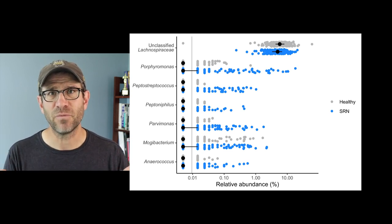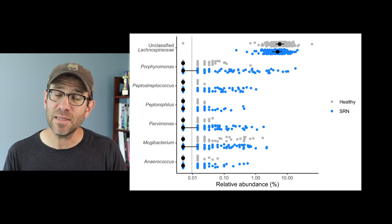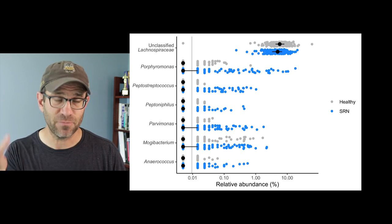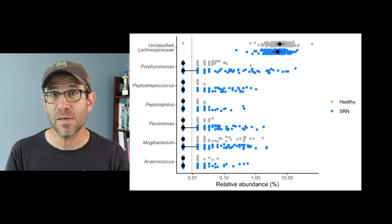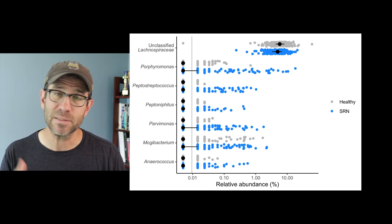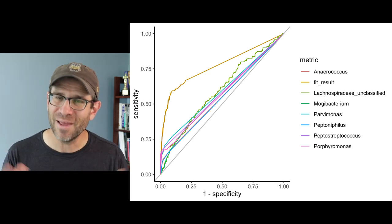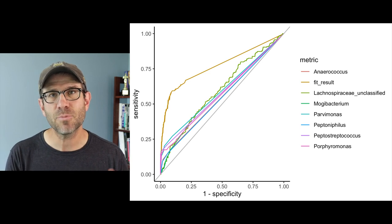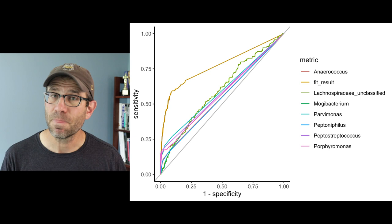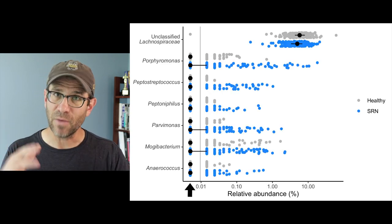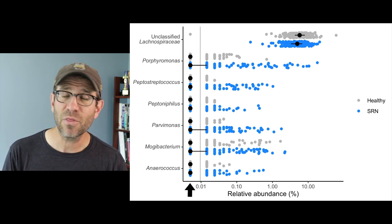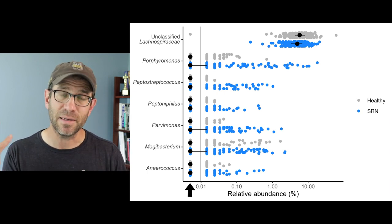As I showed in the last two episodes, we can identify individual features such as microbial populations within a community that are significantly different between healthy people and people with disease. In my application for this current series of videos, it's looking for screen-relevant neoplasias or a special type of advanced lesions within people's colons that typically is indicative of colon cancer. So we can identify these populations that are associated with these SRNs. But at the same time, when we then use those individual populations to say, can we classify individuals as having an SRN or not? The answer is no. They actually do quite poorly on their own.